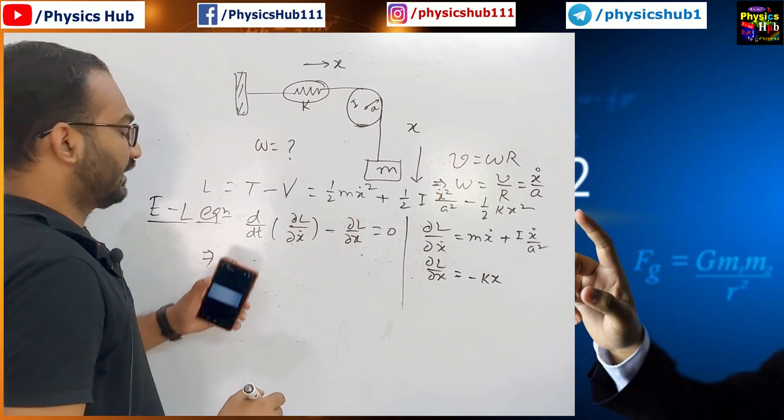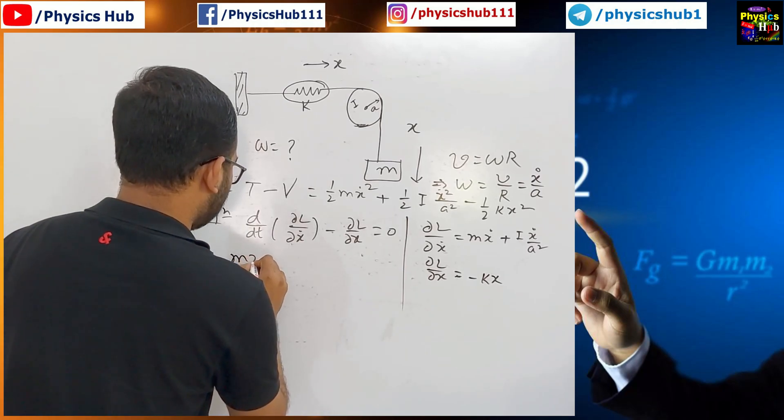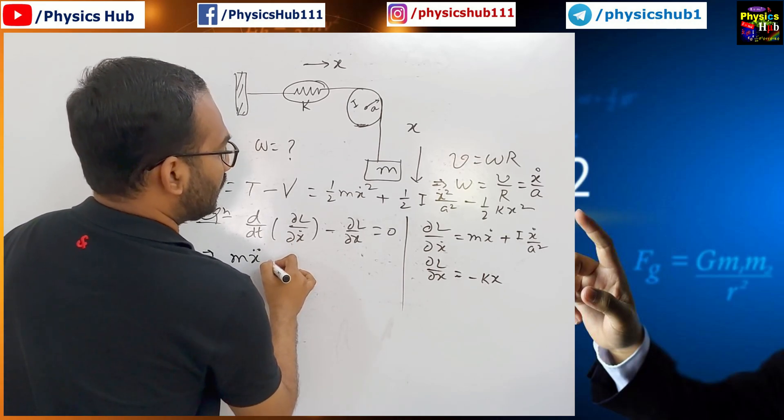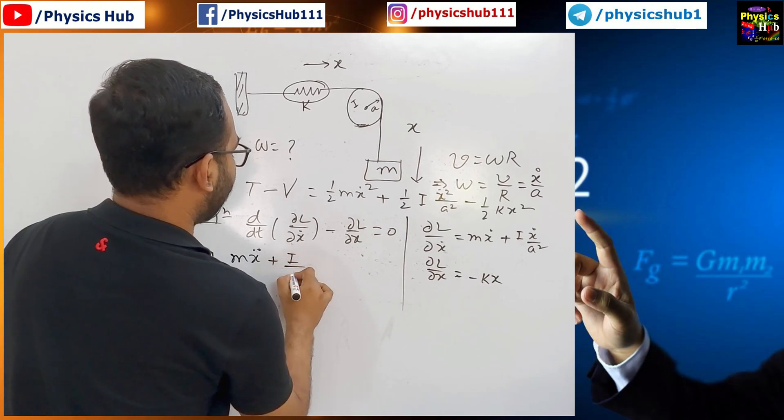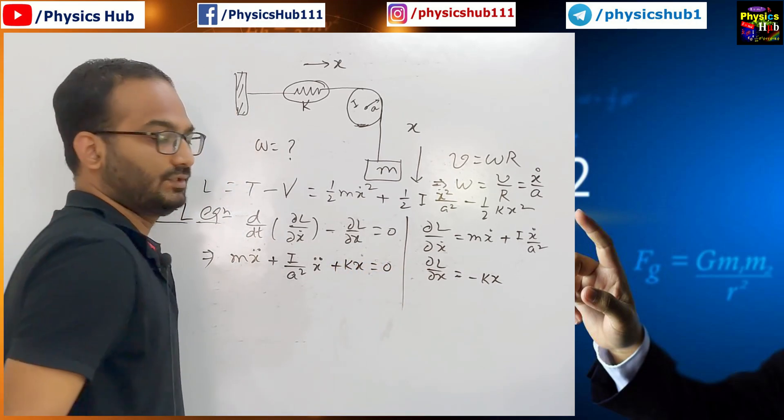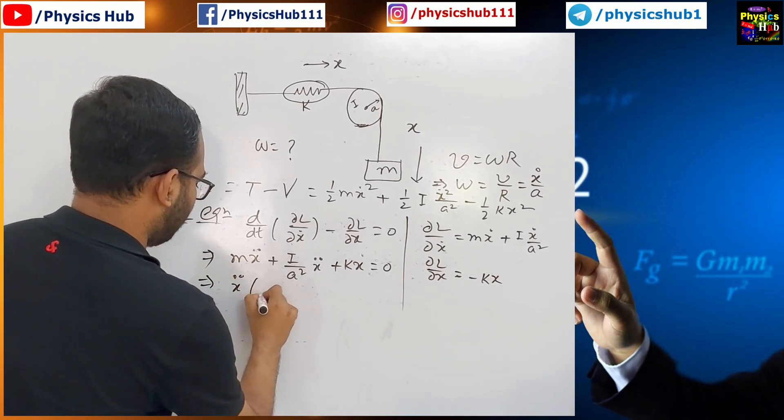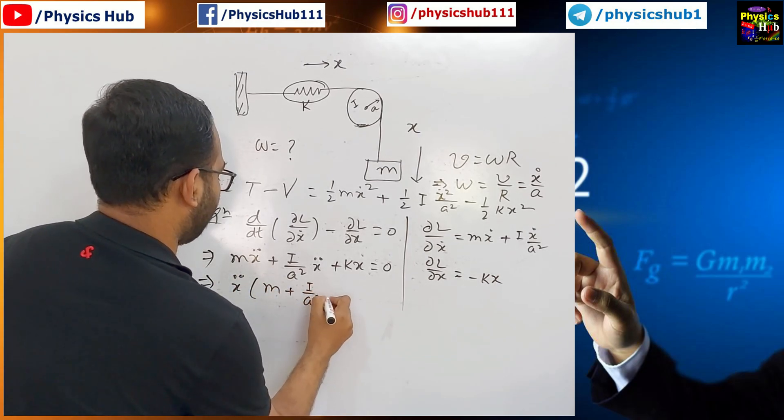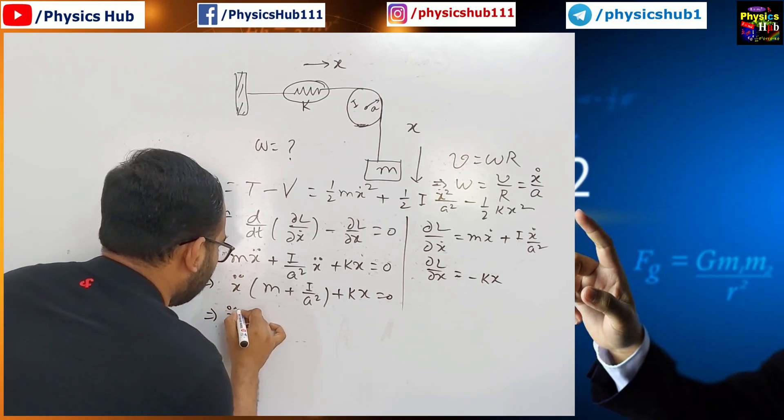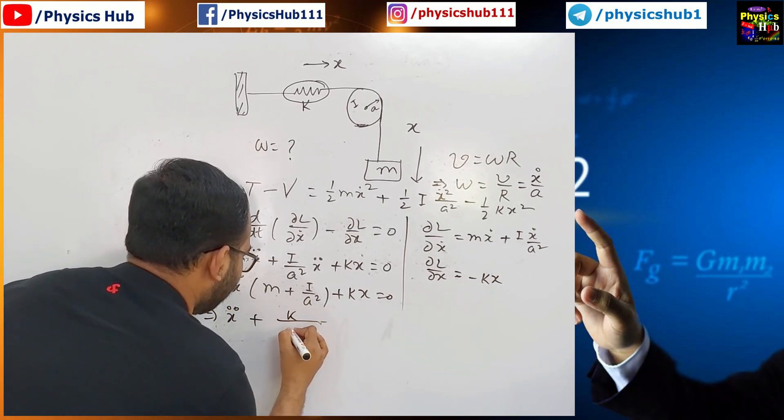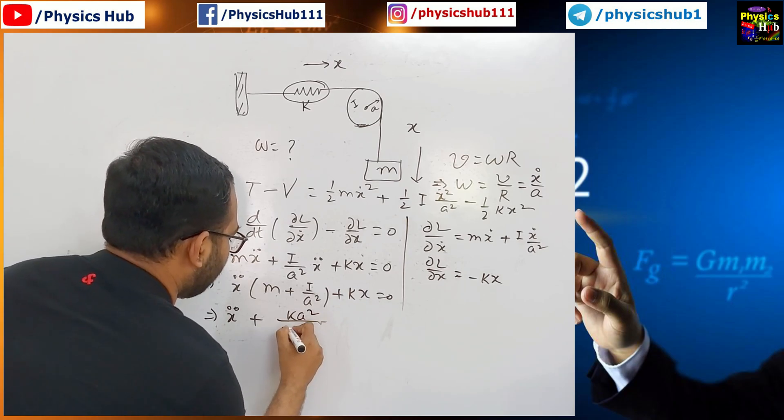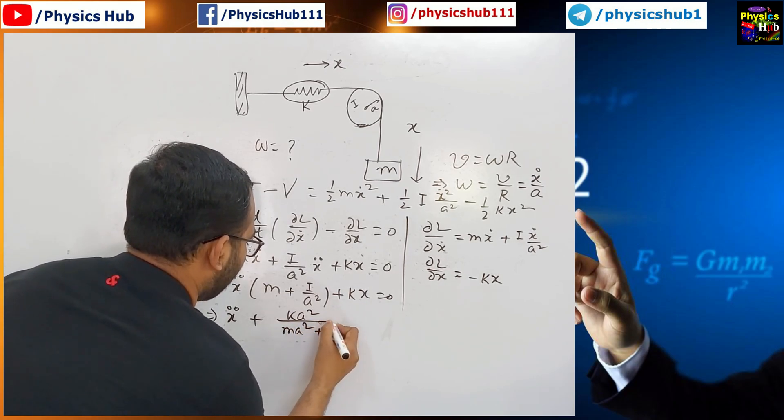Now put these values here in this Euler-Lagrange equation. D dt of del L del x dot. So, m x double dot. We are taking derivative with respect to t. So, plus I by A square x double dot, minus del L del x minus minus plus K x equals zero. Now, what you can do? You can just take this x double dot common. So, m plus I by A square plus K x equals zero. So, we can write x double dot plus K by this whole thing, m A square. So, you can take this A square out in the numerator, then it will come out to be m A square plus I, times x.